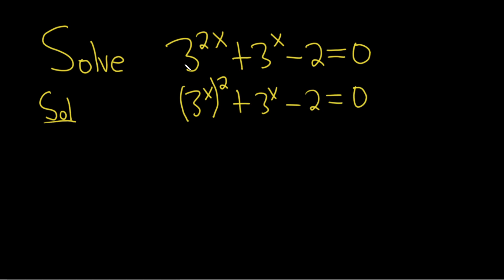You don't really have to make a substitution to do this problem, but let's do it for clarity. Let u = 3^x. So this becomes u^2 + u - 2 = 0.